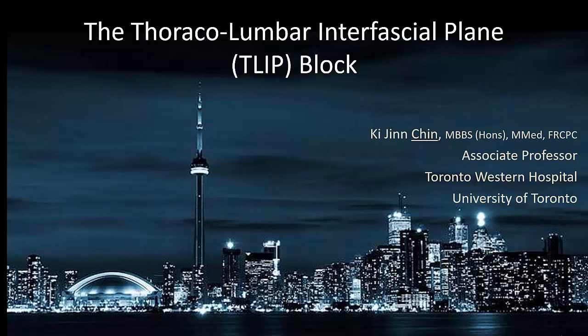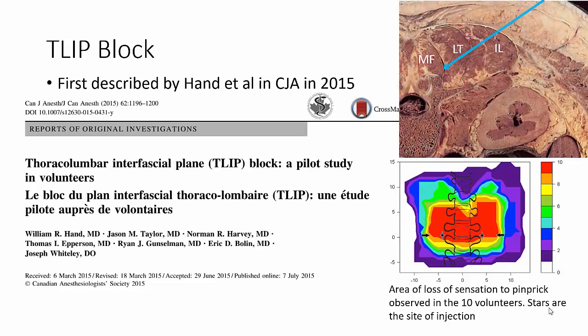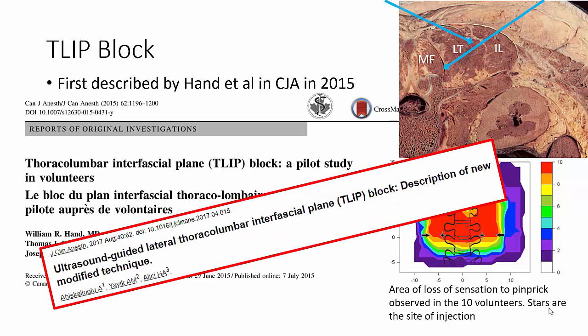This is a short video on the performance of the thoracolumbar interfascial plane, or TLIP block, as we currently do it at Toronto Western Hospital. The TLIP block is a paraspinal fascial plane block that was first described in 2015 by Hand and colleagues as an injection between multifidus and longissimus thoracis muscles in the lumbar area. A modified TLIP block involving a more lateral site of injection between longissimus thoracis and iliocostalis muscles has been reported, but here we will be discussing the original technique of Hand and colleagues with a slight modification of our own.